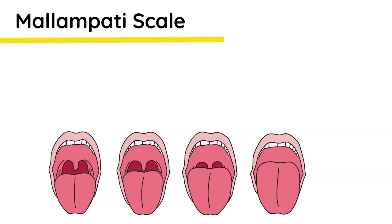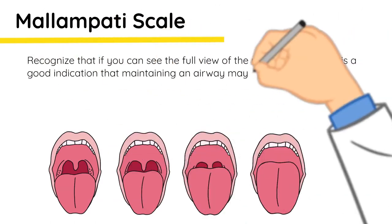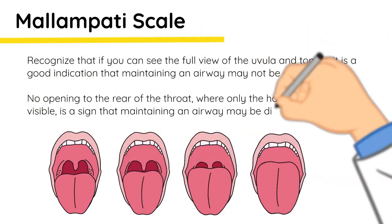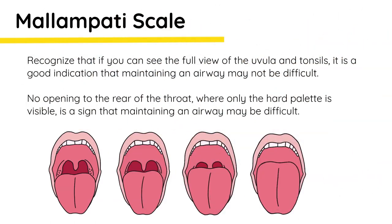The Mallampati Scale: if you can see the full view of the uvula and tonsils, it is a good indication that maintaining an airway may not be difficult. No opening to the rear of the throat, where only the hard palate is visible, is a sign that maintaining an airway may be difficult.